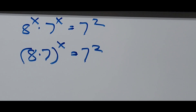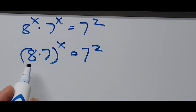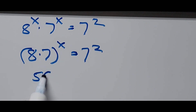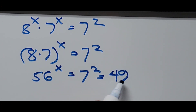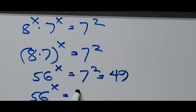We've utilized the same exponent rule again. Now 8 times 7 is 56, so 56 raised to x equals 7 squared. And 7 times 7 is 49, so 56 raised to x equals 49.